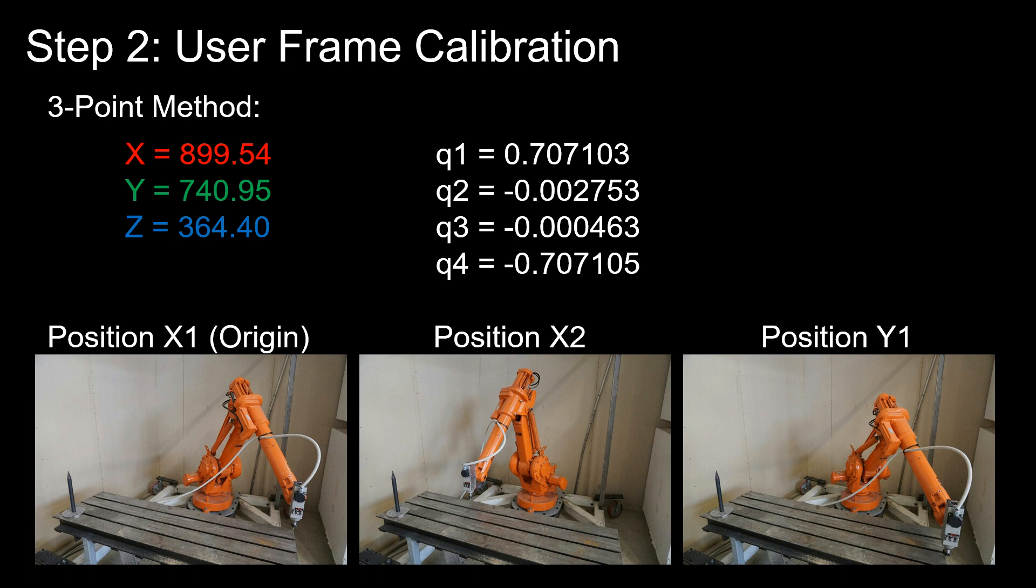So the results here are X equals 899.54 millimeters, that's the distance from the base of the robot to the corner of the table in the X direction. And the quaternion here is Q1 to Q4. It shows that we also have a rotation of the axis compared to the base frame.